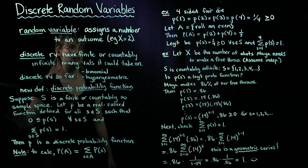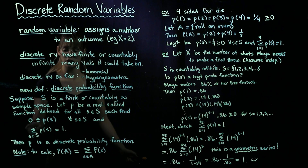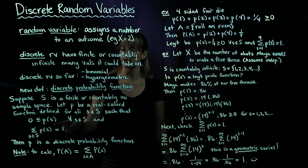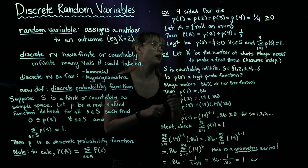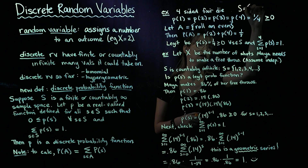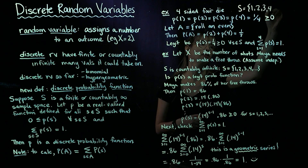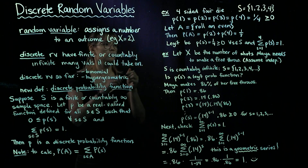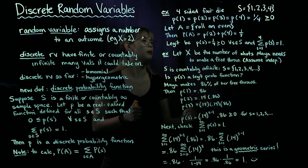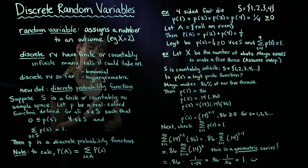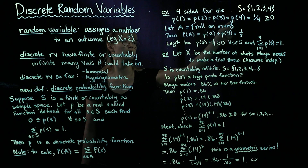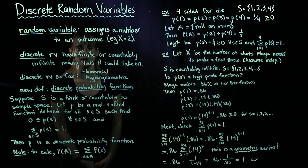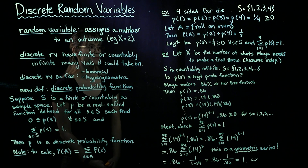Now let's check to make sure that this is a legit probability function. We already checked to make sure that P of S is greater than or equal to 0 for every S in our sample space. Our sample space is {1, 2, 3, 4}, and all of the probabilities are greater than or equal to 0. Now we need to make sure that the sum equals 1. A quarter plus a quarter plus a quarter plus a quarter is equal to 1, so the sum of probabilities over all S is equal to 1.